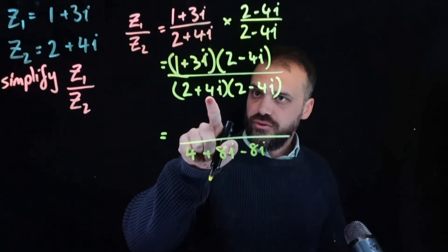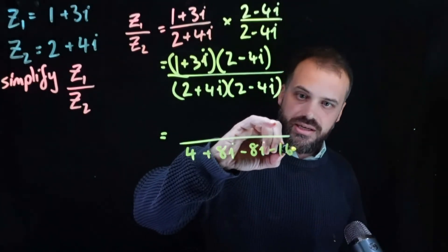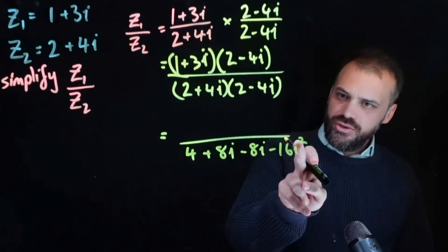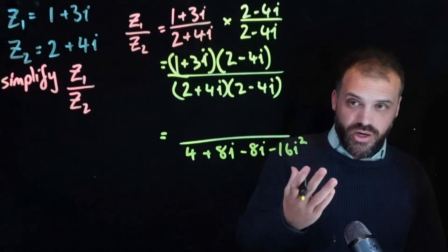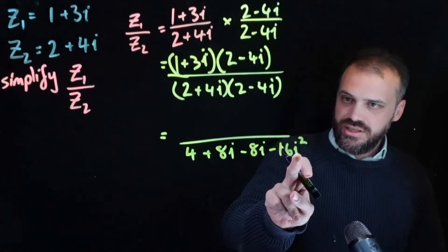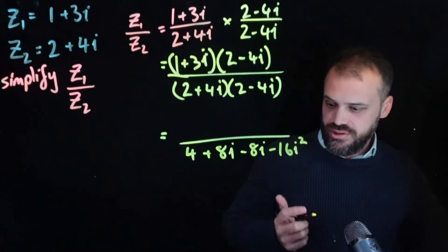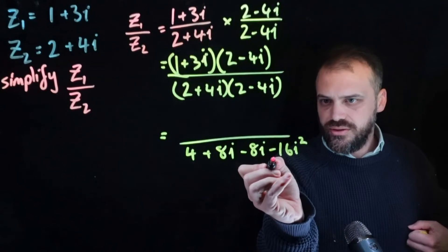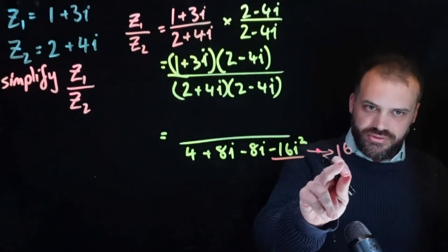And 4i times negative 4i is negative 16i squared. And you know that i squared is equal to negative 1. So that's negative 16 times negative 1. That is positive 16. I'm just going to make a little note for us here. That is equal to positive 16.